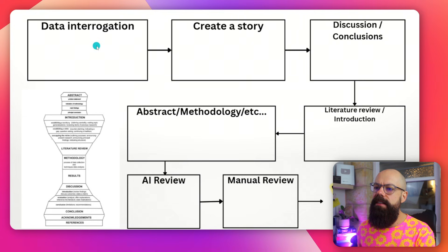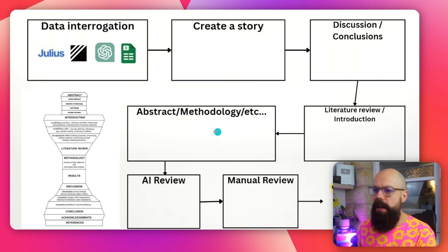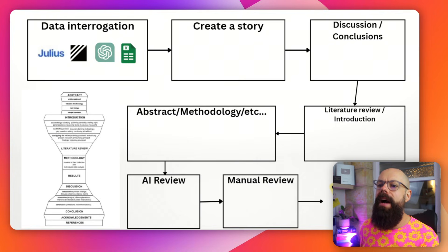When we first start with our paper writing process, we clearly need data, and that's where data interrogation happens. You put all of your raw data and ideas in, and you need to understand what the data is actually telling you. You can use tools to help you along the way. Julius AI is brilliant — it's like having a little analyst in your pocket.